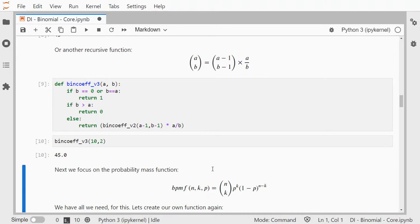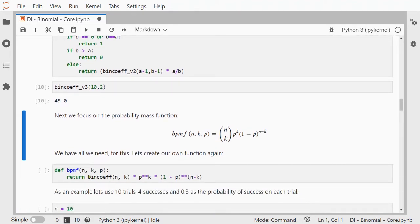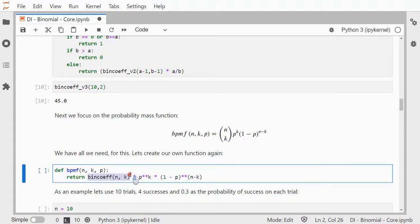All right, next we can now focus on that probability mass function. We have this binomial coefficient now, these are just multiplications, so we can just calculate all of this, the binomial coefficient, with our own function, multiply by p to the power of k, so twice an asterisk is to the power of in Python, 1 minus p to the power of, and then again n minus k.